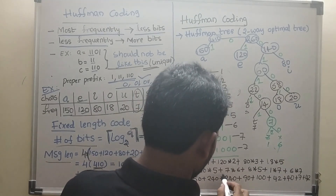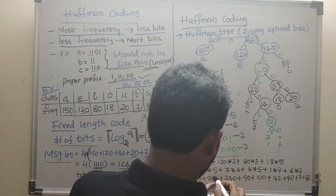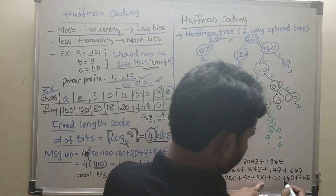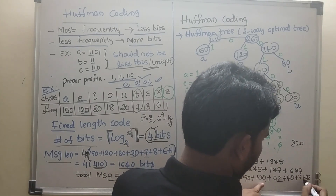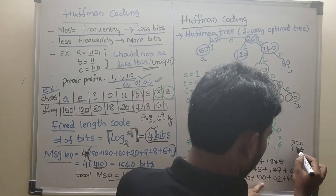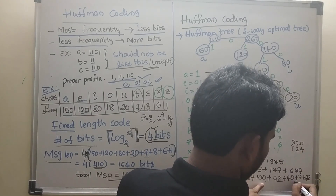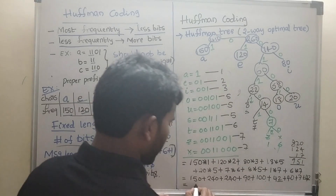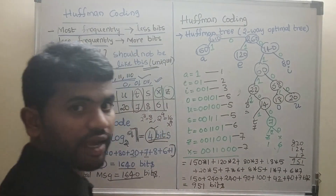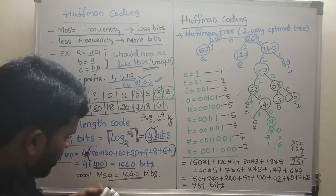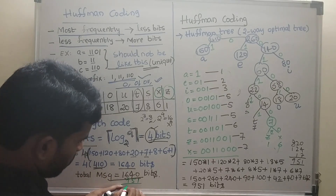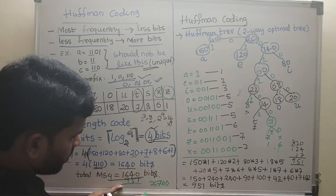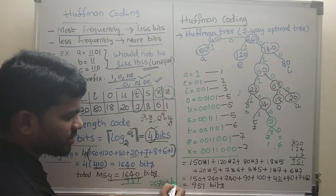Adding all those values together, you will get approximately 951 bits total. Comparing to the fixed-length result of 1640 bits, there is approximately a 700-bit difference — just for this small message.